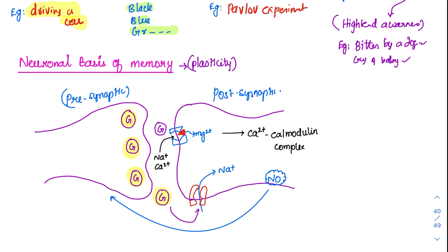The most important receptor among these two is NMDA. But for this receptor to get activated, it needs help from its friend, which is called AMPA. So glutamate initially will go and act on the AMPA receptors — even though NMDA is more important — and it will cause the influx of sodium ions.